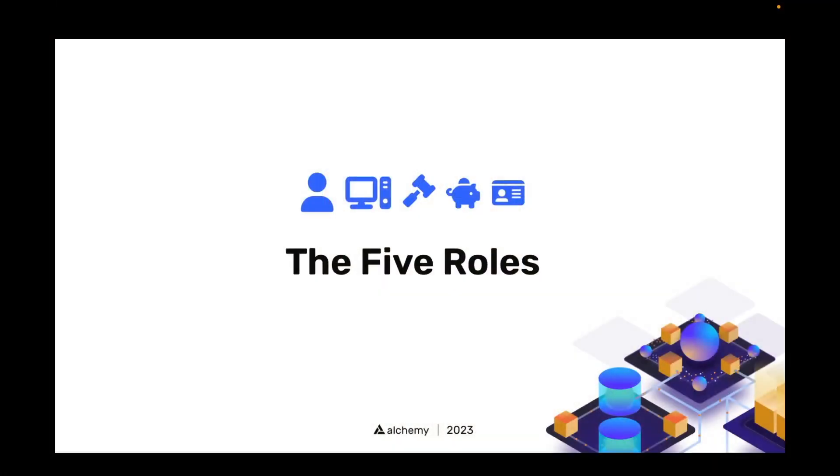In the last video we defined account abstraction and mentioned that EIP 4337 is the implementation we'll be talking about moving forward. The reason we'll be talking about this specific EIP is because it does not require any core protocol changes, which means all of the magic to make it happen happens either off-chain or inside smart contracts. When I first started looking at EIP 4337 I was a bit intimidated, but that's until I started to break it down. There are a lot of new words involved, but really we only need to worry about five main roles.